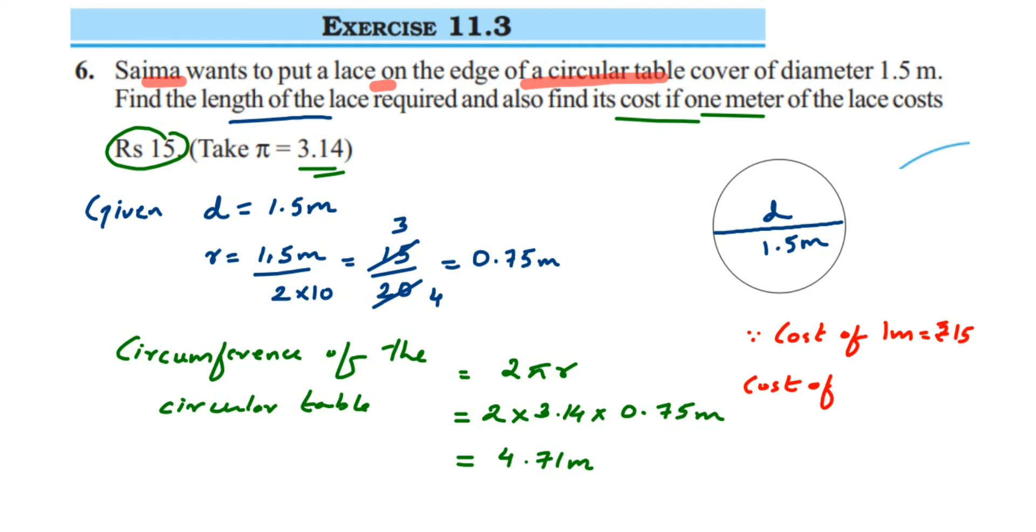So 4.71 meter will be equal to - we have to multiply here - 15 rupees and 4.71. So this will give us 70.65 rupees. So this will be the total cost.